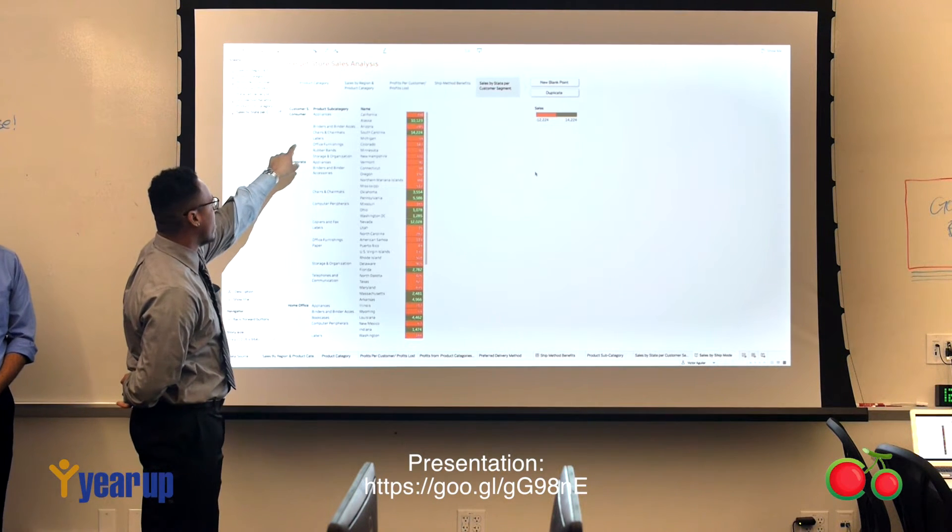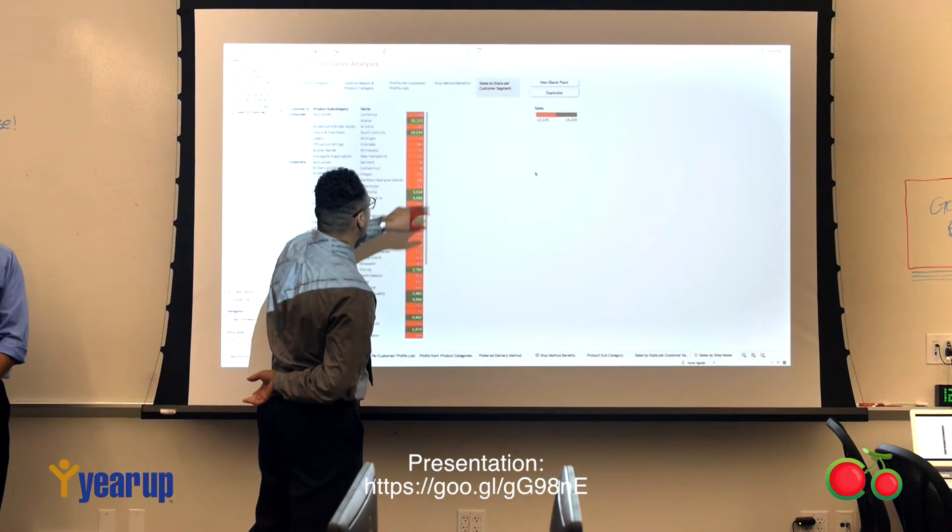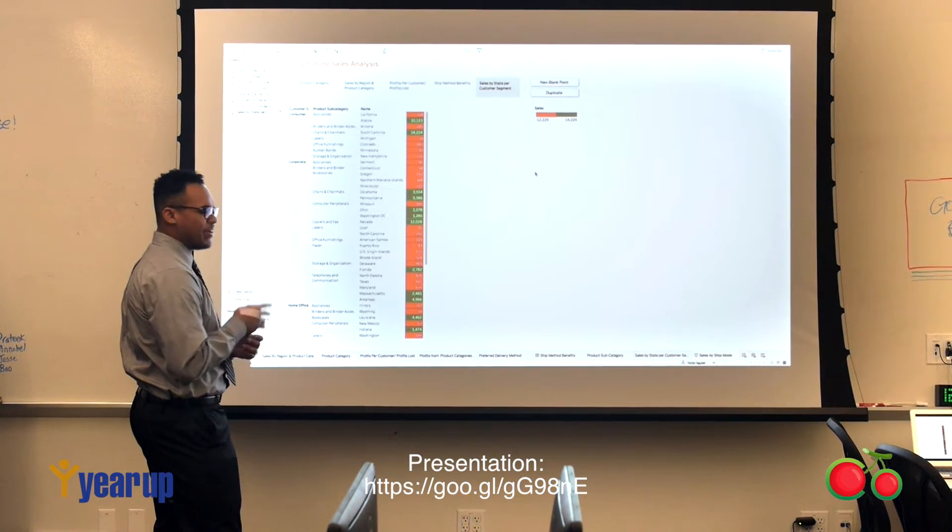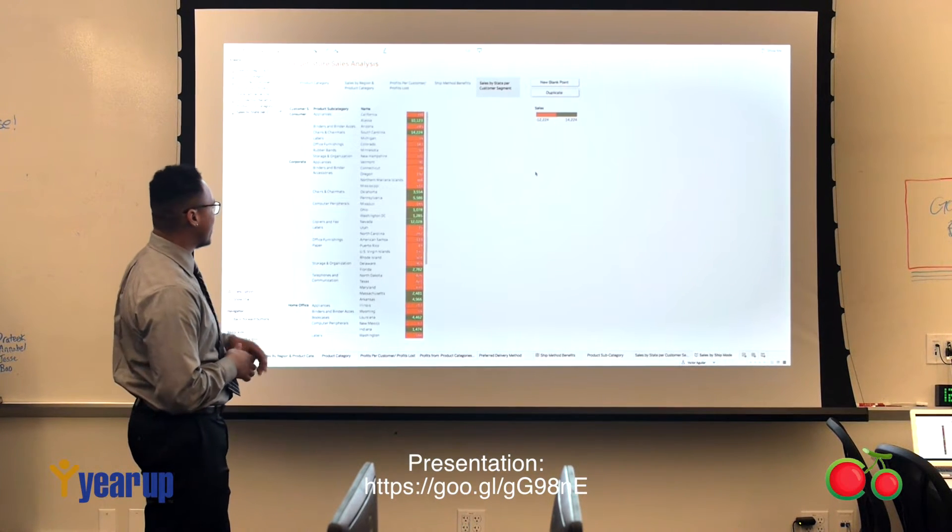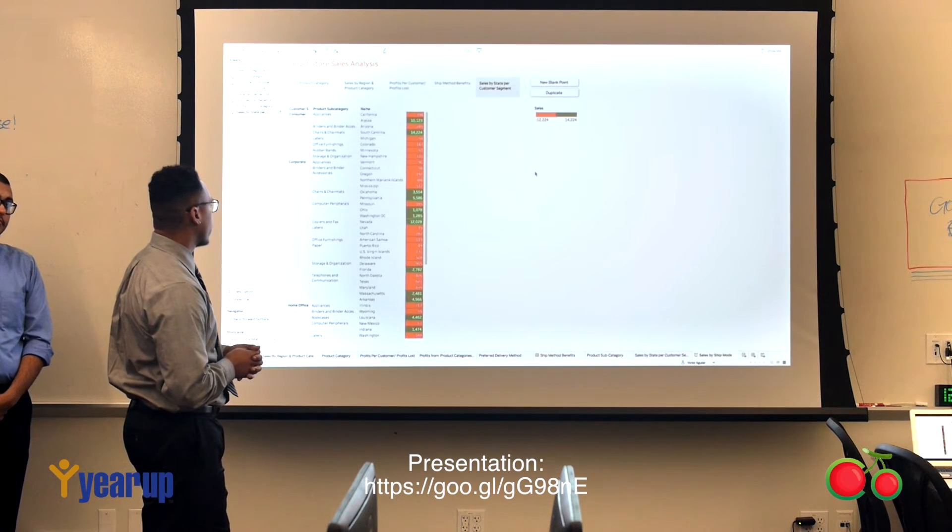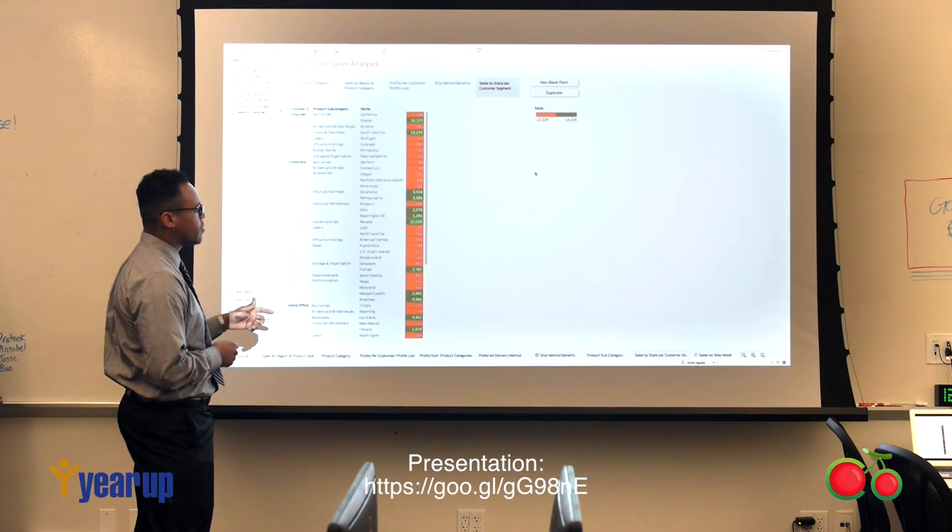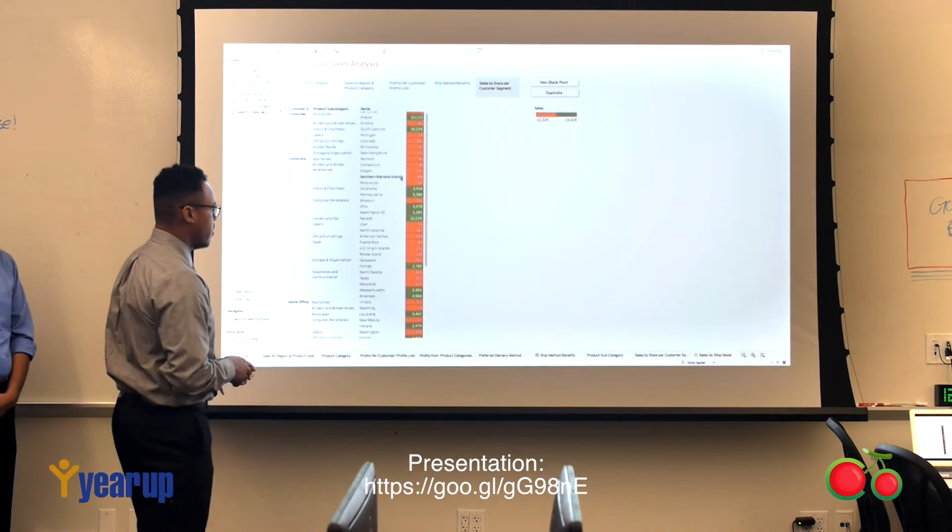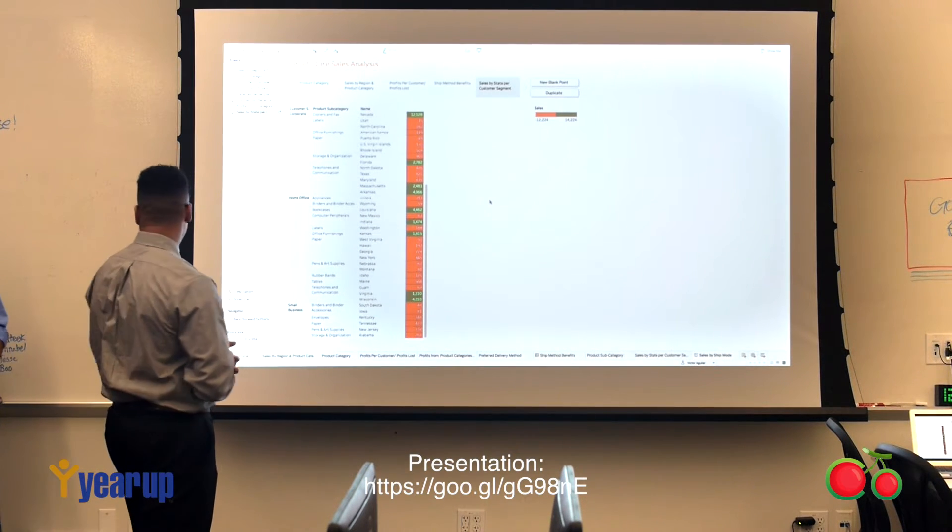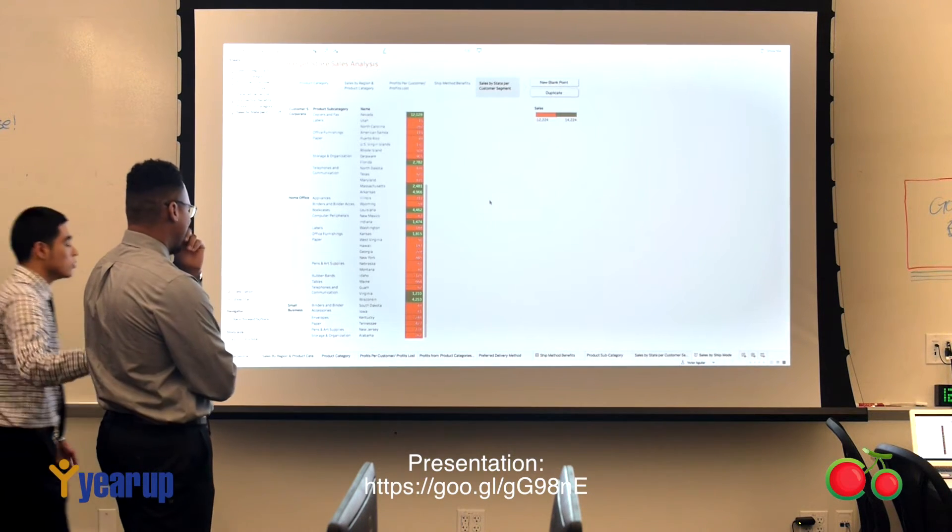As you can see right here from consumer appliances, in Alaska we're selling 10,123 appliances. What we did here is we broke it up into our customer segments. We have consumer, corporate, home office, and small businesses.